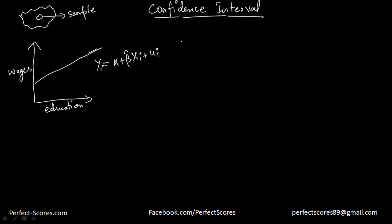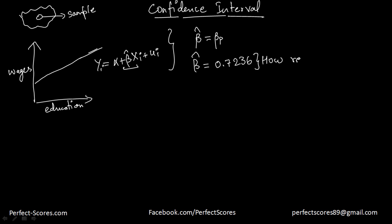Our objective is that beta hat should be as close as possible to the actual population parameter. Let's suppose we run the regression analysis and get the value of beta hat to be 0.7236. The meaning of this value is: what is going to be the change in wages level if I change the education level? That's what it represents.